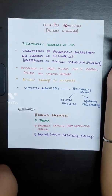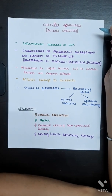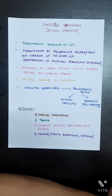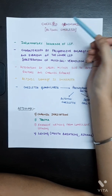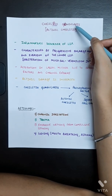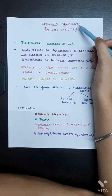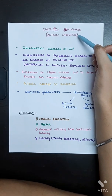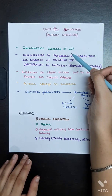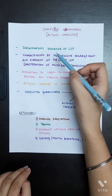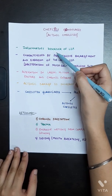Today we are going to discuss Cheilitis Glandularis. The term 'cheilitis' means inflammation of lips, caused due to some glands — that's why the term Cheilitis Glandularis, which is also known as Actinic Cheilitis. As the name suggests, it is an inflammatory disorder of the lips.